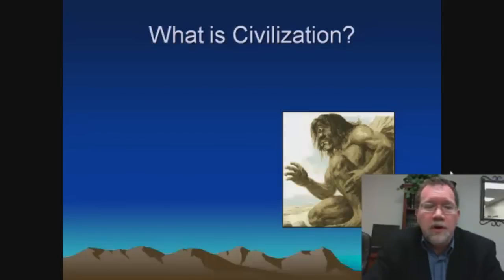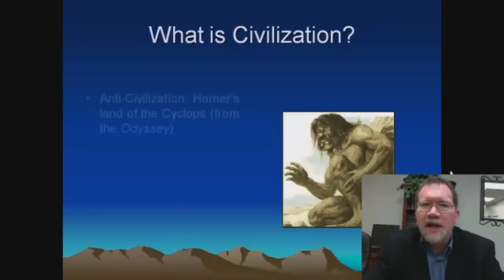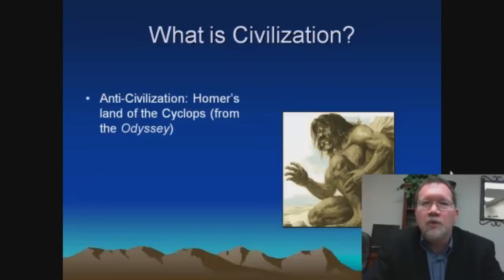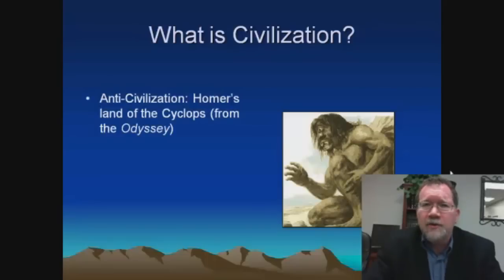Civilization might be easier to define by telling what it's not. I'd like to use an example — a very famous passage from Homer's Odyssey. You're probably familiar with the Odyssey to some degree, particularly the famous passage out of Book Nine, where Odysseus recounts his visit to the land of the Cyclops. Many people remember the episode where Odysseus and his men are threatened by the Cyclops. I'd like to read a few lines from Book Nine to establish the way in which the Greeks viewed the Cyclops as a barbaric people outside of civilization.